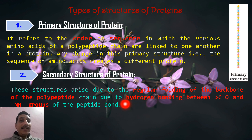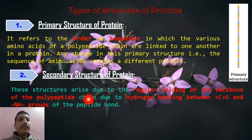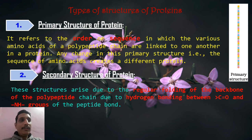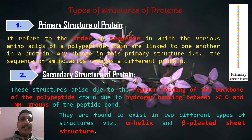The regular folding of the polypeptide chain is stabilized by hydrogen bonding between C=O and NH groups. These hydrogen bonds hold the chain together and make the secondary structure stable. There are two types of secondary structures: alpha helix structure and beta pleated sheet structure.